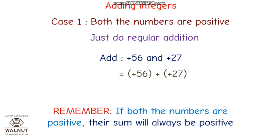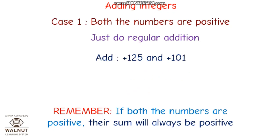We can just do regular addition. For example, plus 56 plus 27, the answer is plus 83. Another one: plus 125 plus 101. When two numbers have a positive sign, the sum — the answer — will always be a positive number.